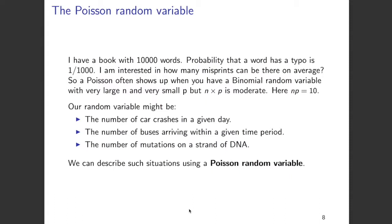Some examples of Poisson random variables might be the number of car crashes that happen in a given day, or the number of buses arriving within a given time period. We'll describe such situations using a Poisson random variable and look at the distribution of this random variable in this video.